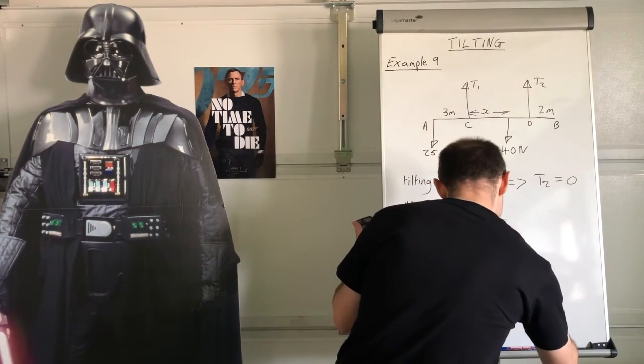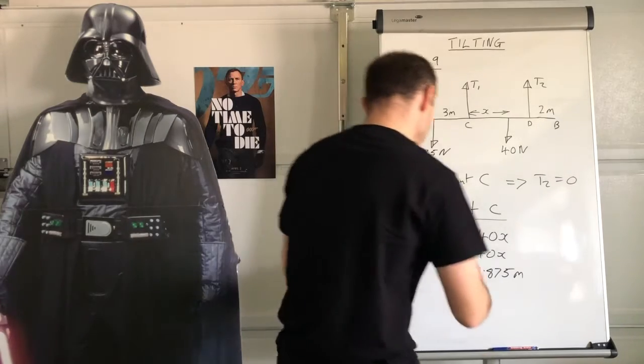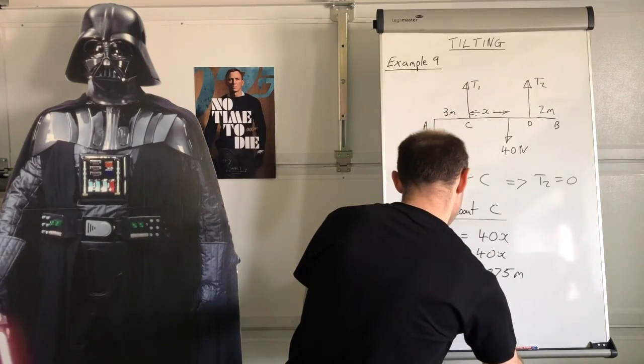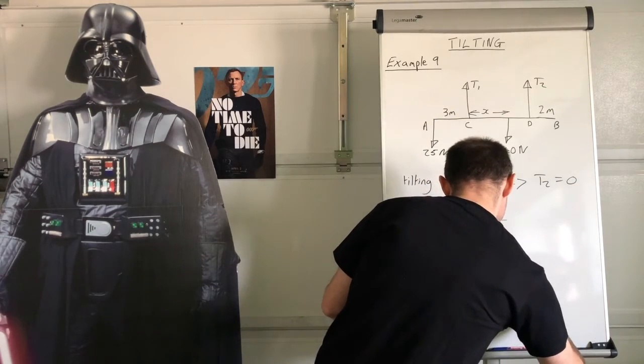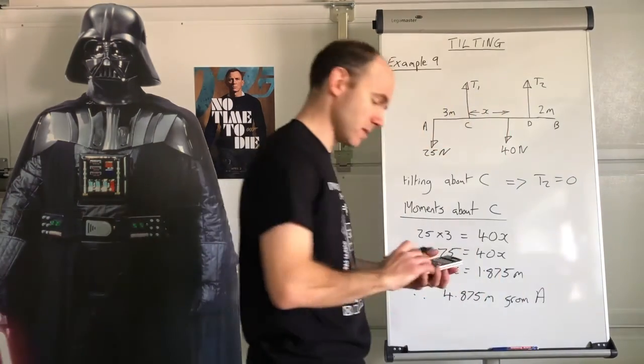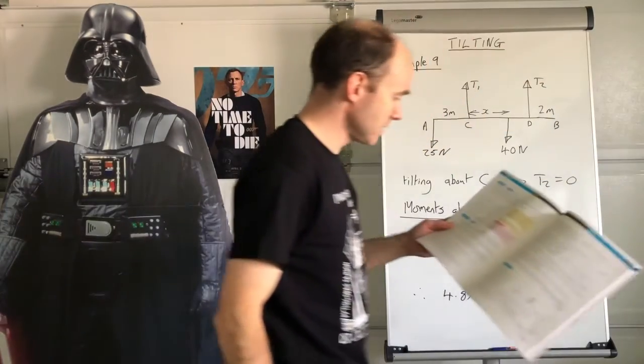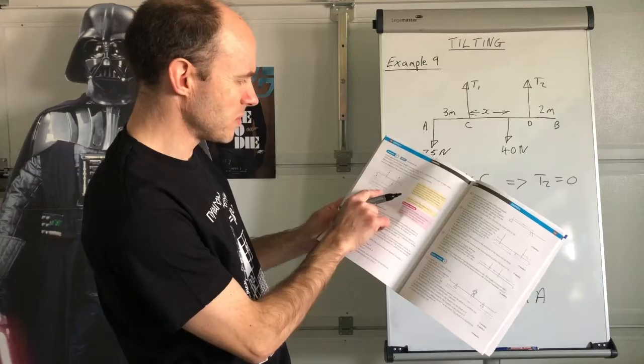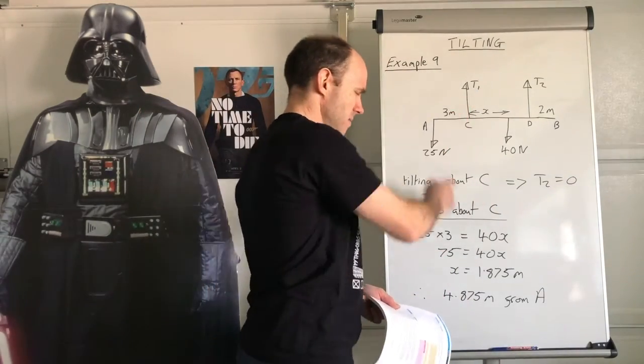So X is 1.875 meters, and it wanted it from A, didn't it? So therefore, 4.875 meters. And even though the question said do it from A, I'm going to write down from A as well. And yeah, you see in the textbook they did this awkward thing with the X minus 3. Don't do that. Don't do that. Keep it nice and simple like this.